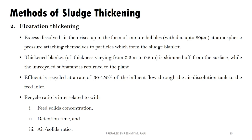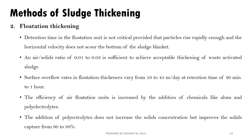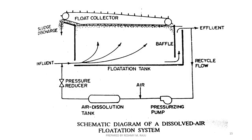The un-recycled portion is handled separately. Horizontal velocity is kept controlled. The air-to-solid ratio used is 0.01 to 0.03. The surface overflow rate is 10 to 45 meters per day, and the retention time is 30 minutes to 1 hour. Chemicals like alum and polyelectrolytes can be added to improve efficiency. This method can achieve solid concentration removal efficiency of 90 to 98%.